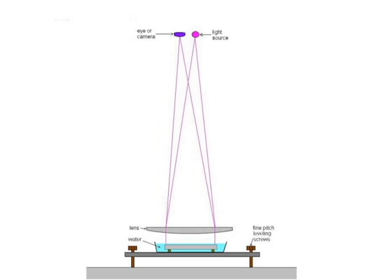Don't forget that in water, one fringe equals three-eighths of a wave and not a half of the wave as it would be tested in air.